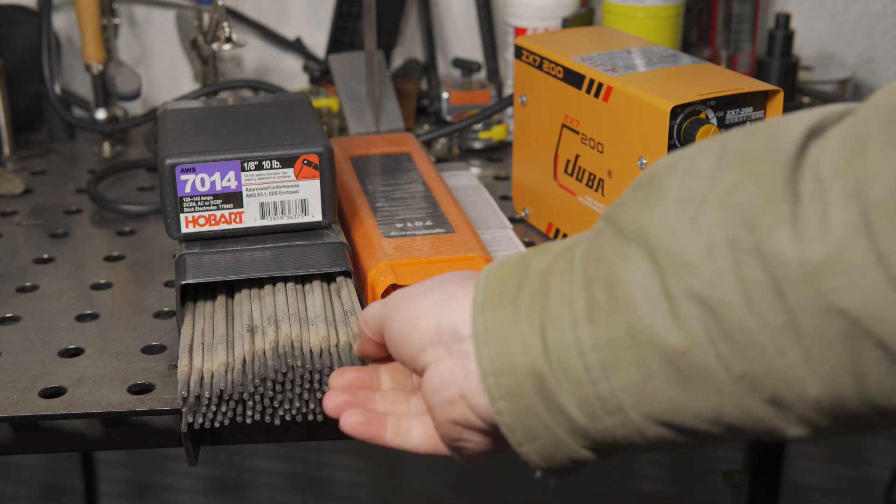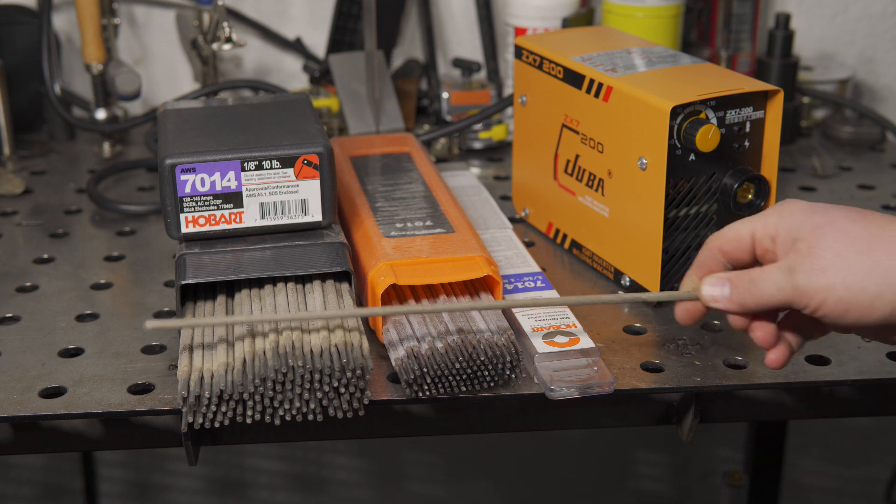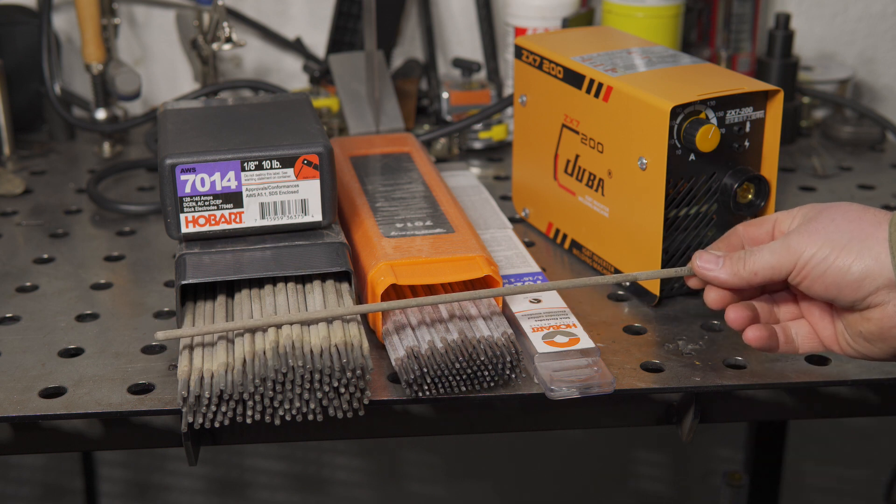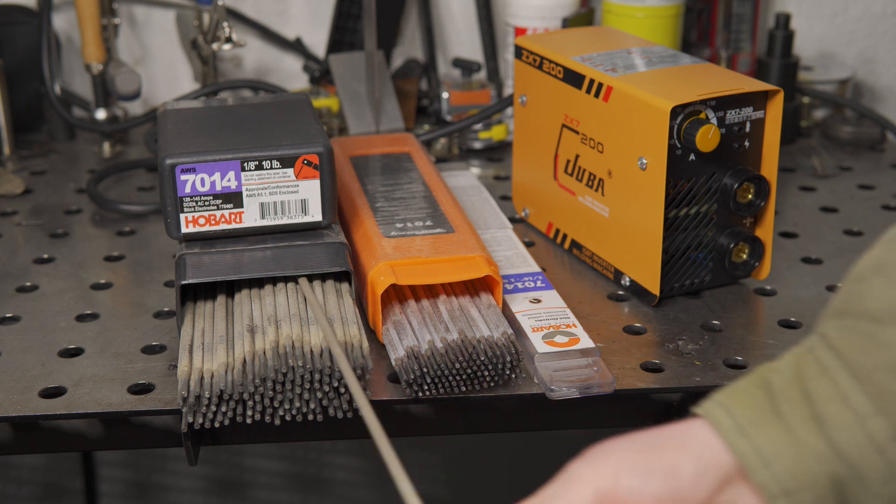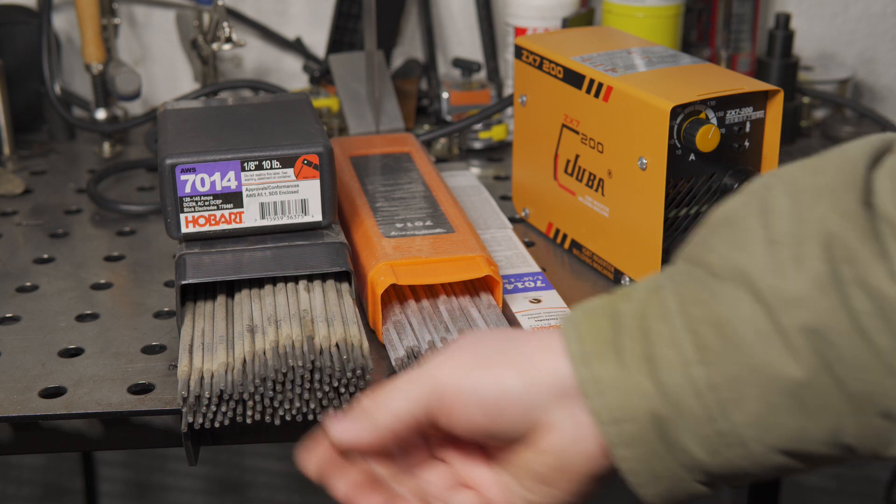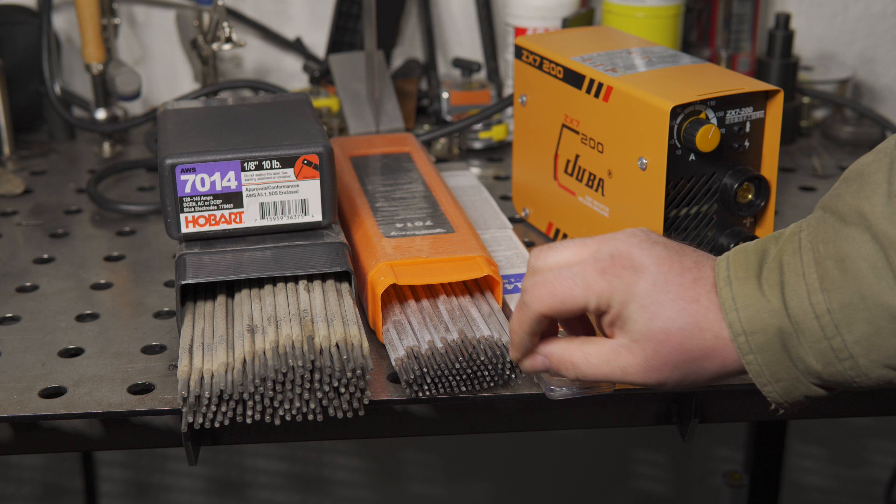7018, 6010, 6011, and even 6013 seem to get the bulk of the talk when it comes to stick welding. At least it seems that way to me. Obviously, there are plenty of people who use 7014 rods, but I think it tends to get overlooked by some.